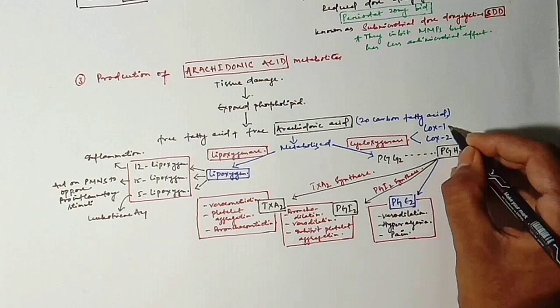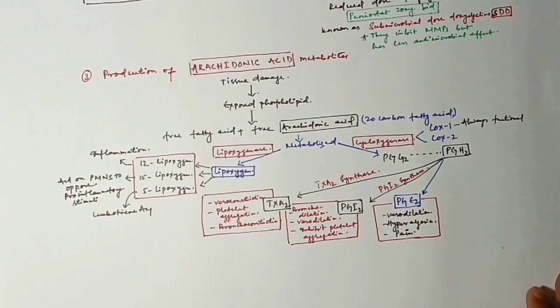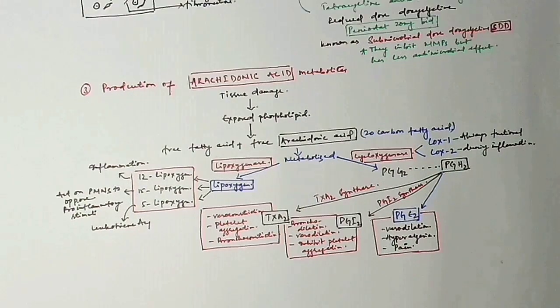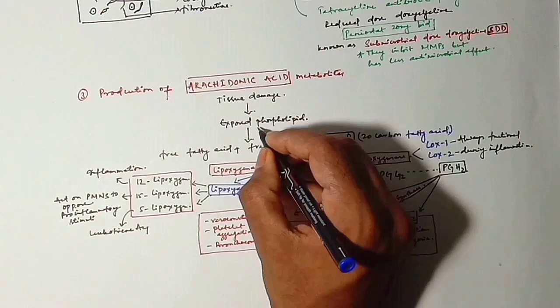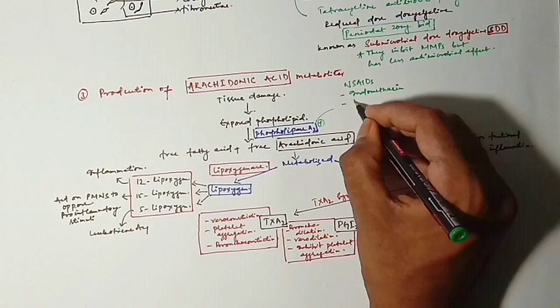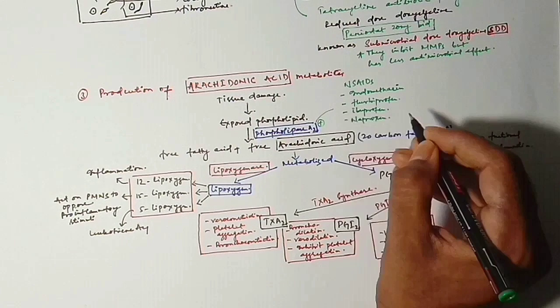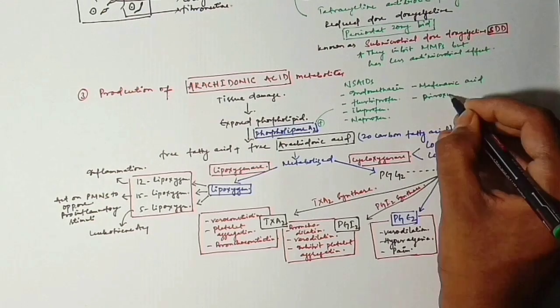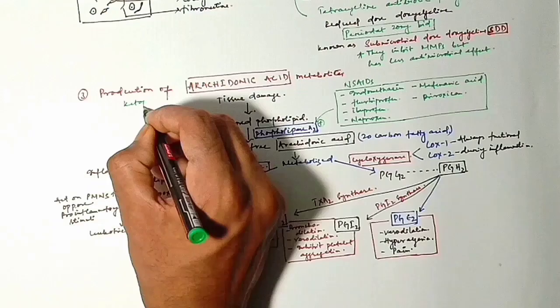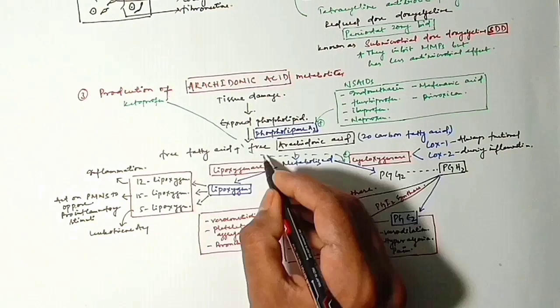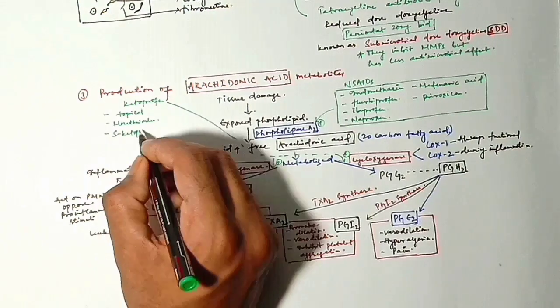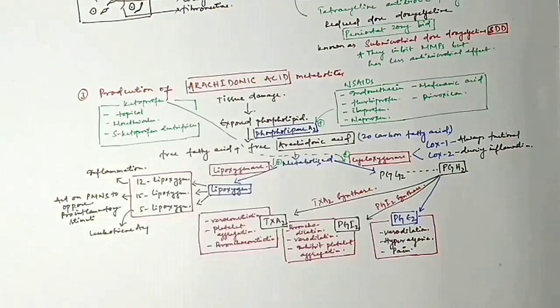How can we stop it? We can inhibit that by inhibiting the enzyme phospholipase A2. Phospholipase A2 needs to be inhibited with the help of NSAIDs, that is indomethacin or flurbiprofen, ibuprofen, naproxen, mefenamic acid, piroxicam. The best is ketoprofen which we can give topically or mouth rinses or S-ketoprofen dentifrices, which inhibit both the lipoxygenase and cyclooxygenase pathway.